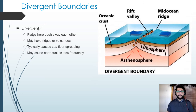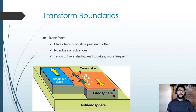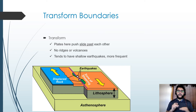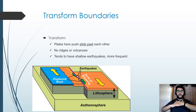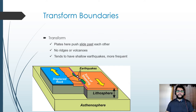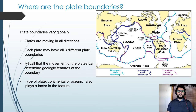Transform boundaries are famous for having pretty powerful earthquakes. That's because these earthquakes have a very shallow focal area. What these plates are doing is sliding right past each other, causing movement. When that energy builds up, it can lead to an earthquake.